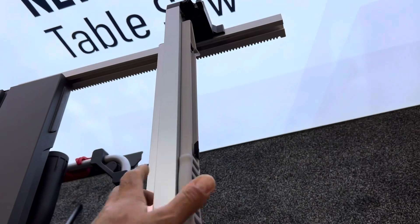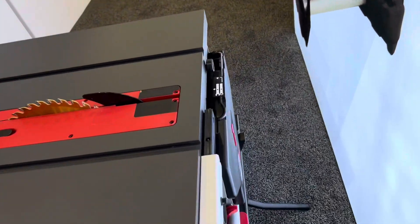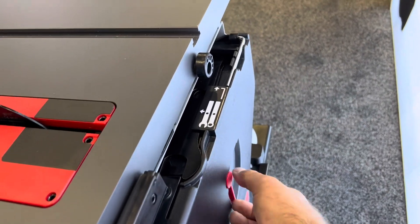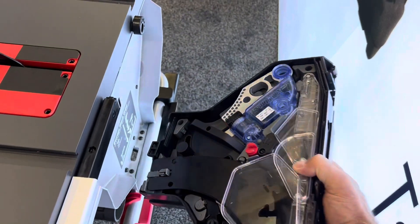It's got a push stick on the fence that's right there, as well as behind it right here it's got a package that holds all of your tools, a spare cartridge, a riving knife, everything right there.